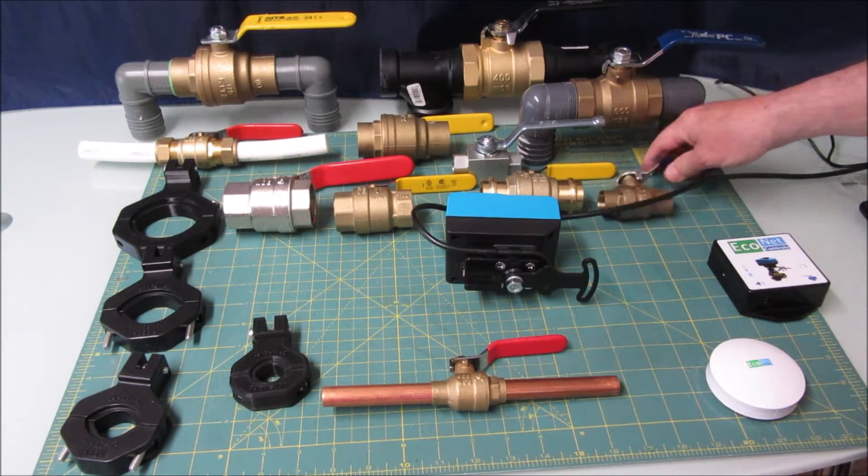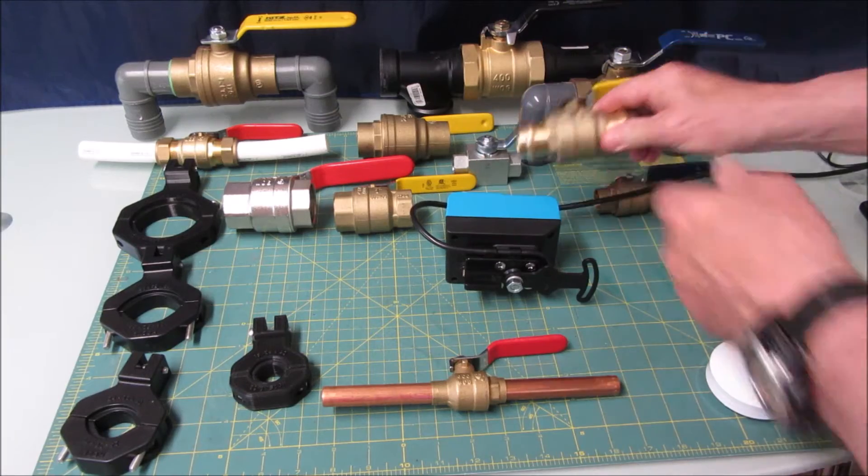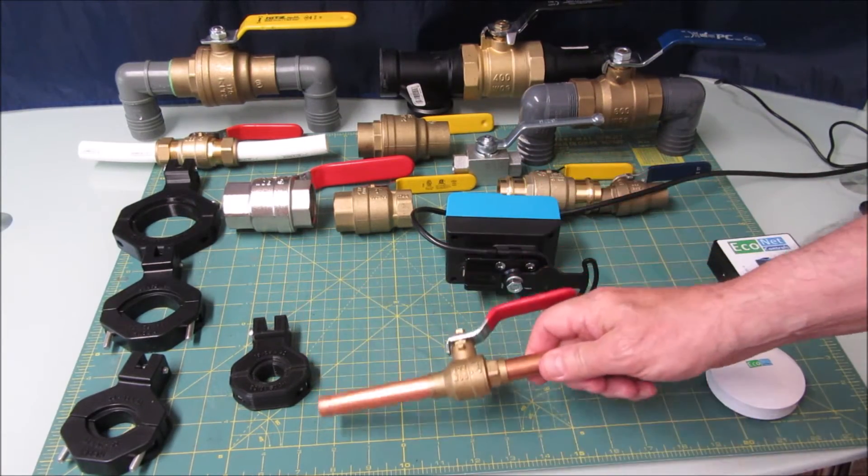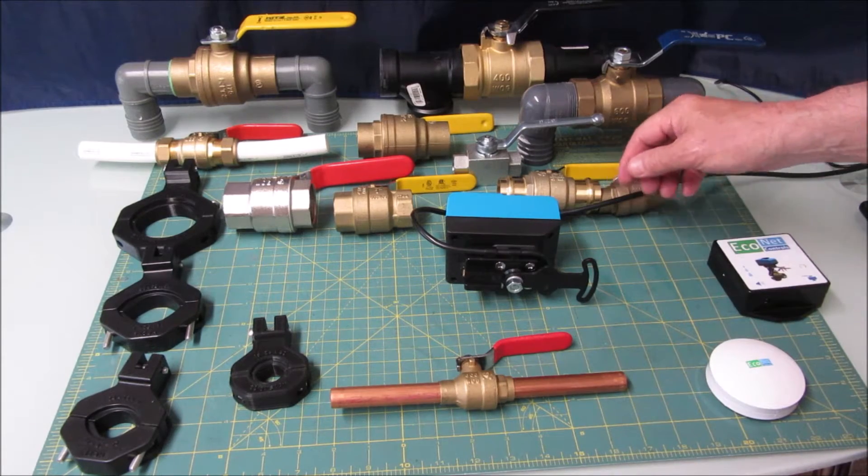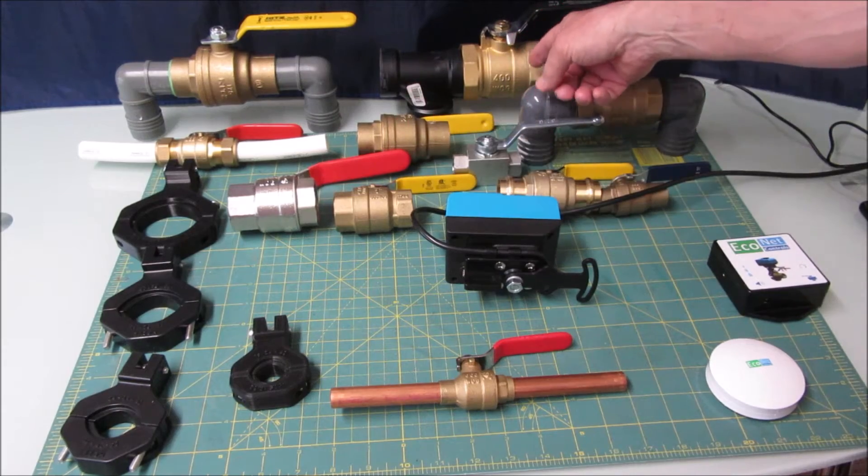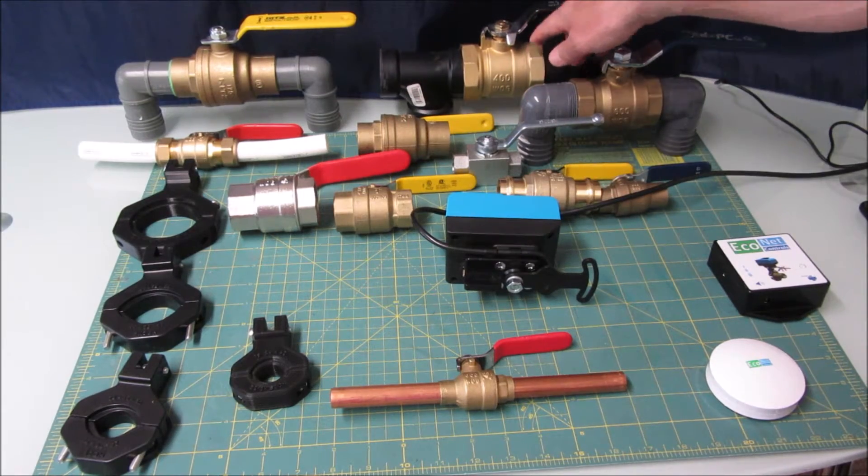A typical home will have a three-quarter or one inch valve in one form or another. It's unusual to have a half inch valve, although there are some, and it's unusual to have larger than a one inch valve. This is a one and a quarter, and we actually go all the way up to two inch. That's a very large valve.